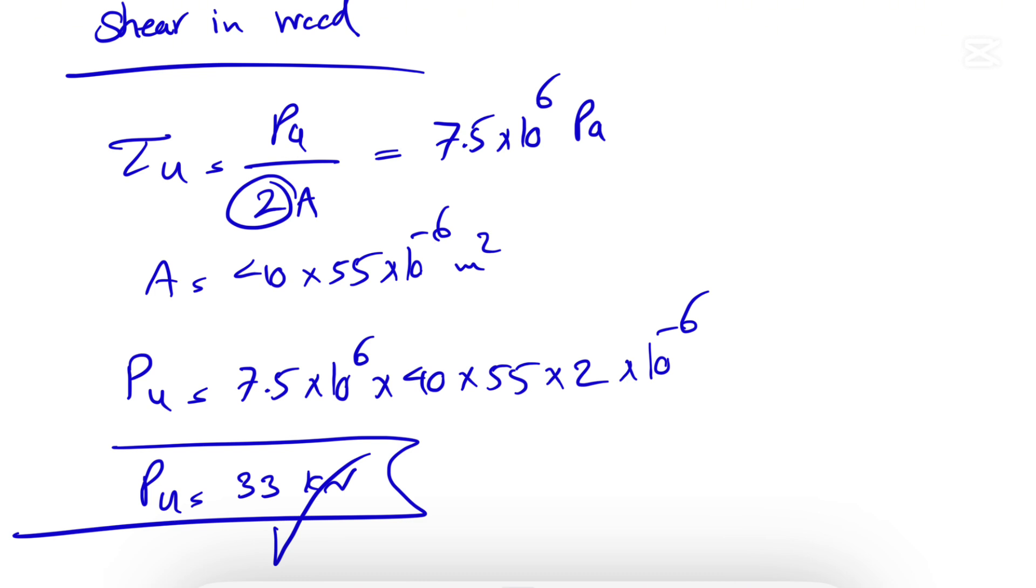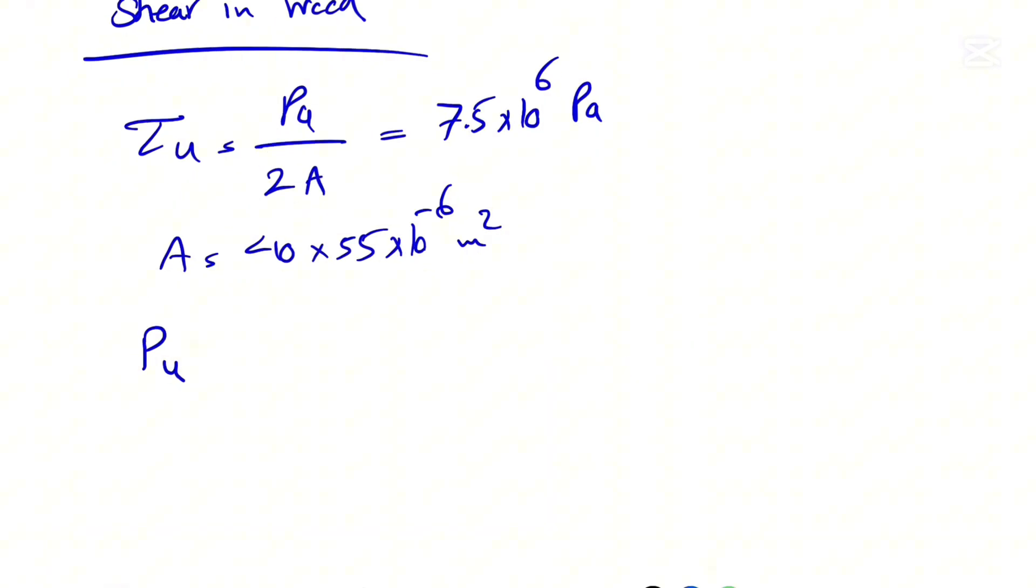So 2 times 7.5 is 15, times 40, times 55. That's going to be 33 kilonewtons. Since it's slightly bigger than what we found from the shear in the pin, this would be our winner. Our ultimate P would be 32.8 kilonewtons.